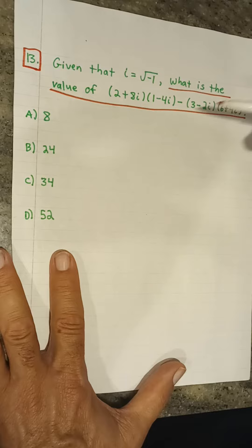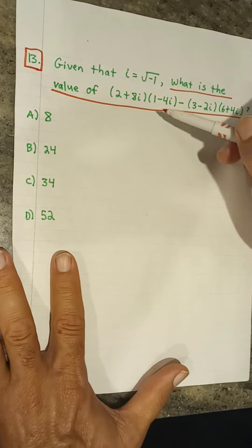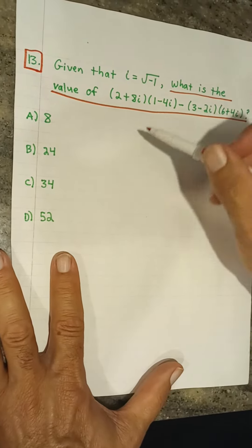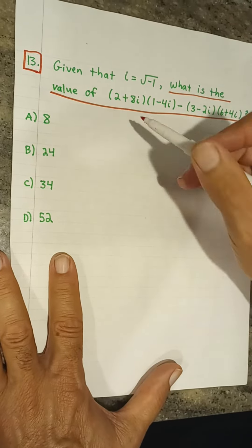So let's look at the first part of this. We're going to see what happens when we foil this. We do first 2 times 1 is 2.